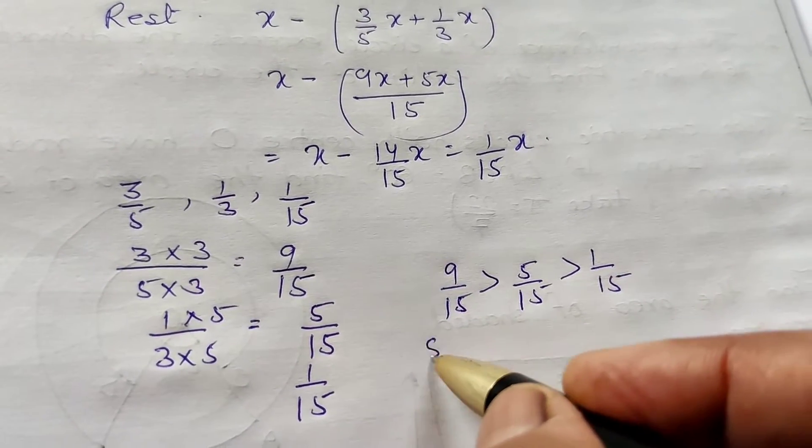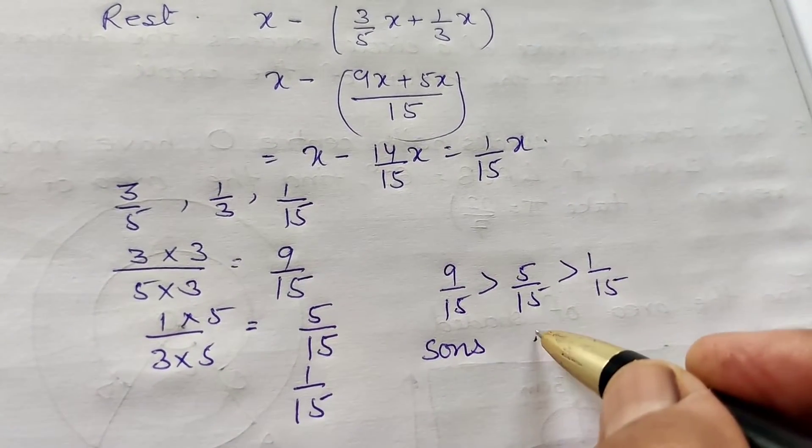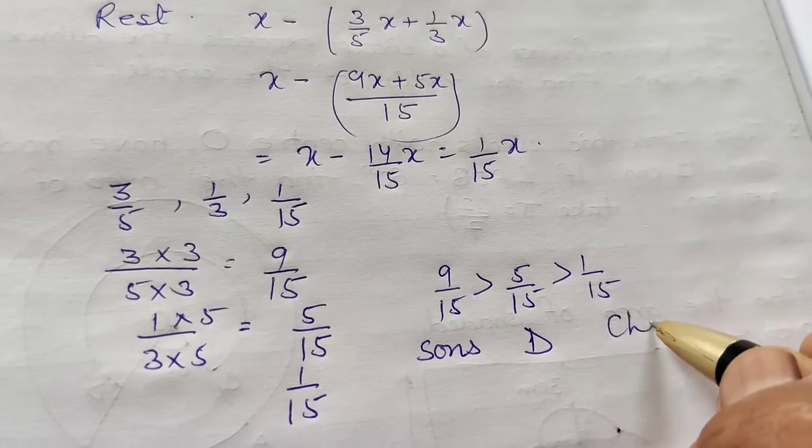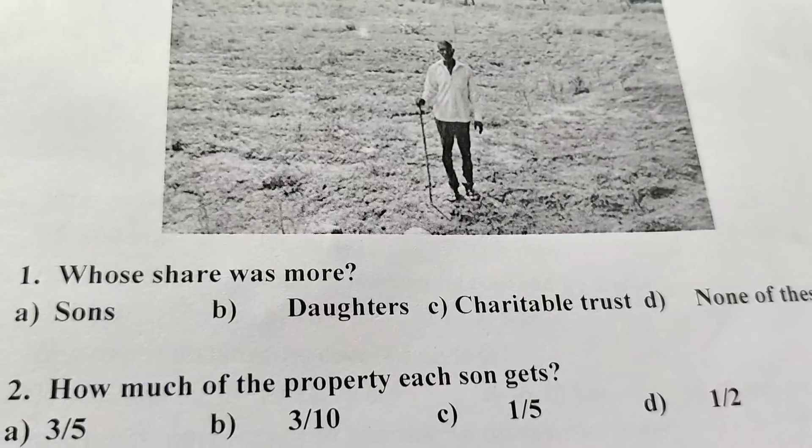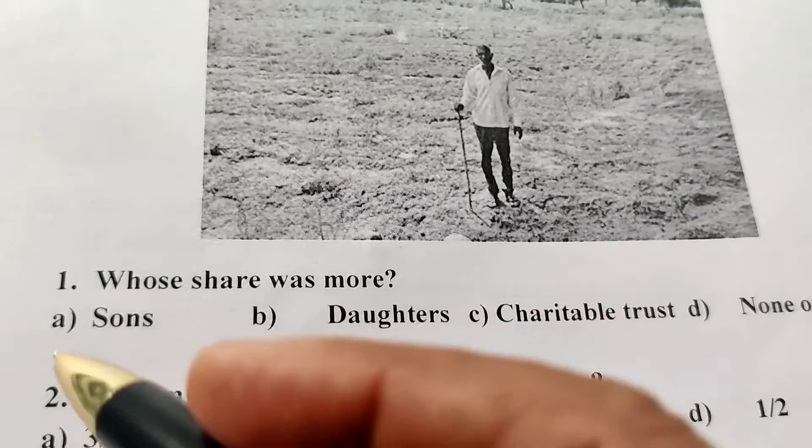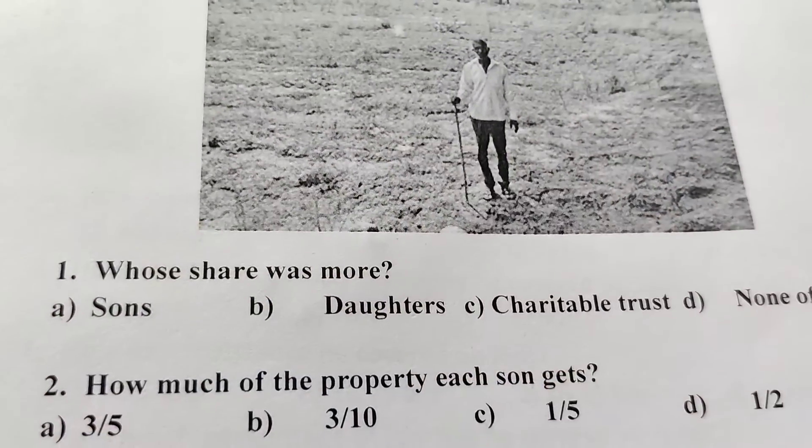It means the portion of son, daughter, and charitable trust. So which portion is more? Sons. Whose share was more? Sons. The first answer is sons.